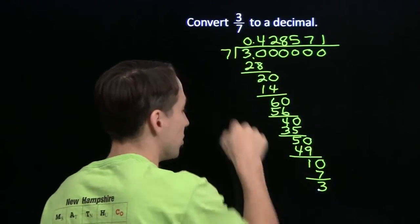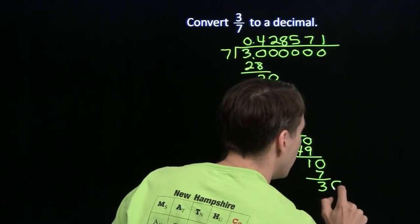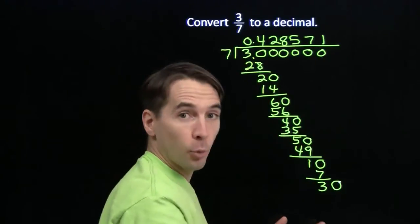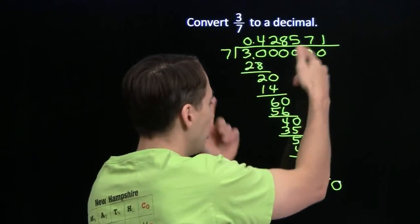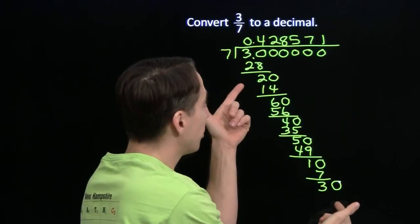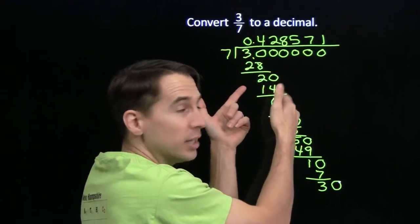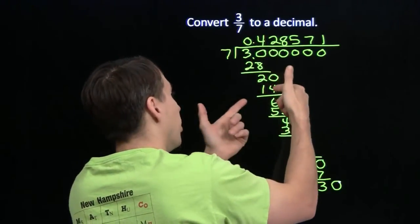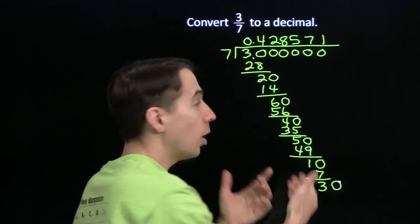7 into 3, we'll bring down a 0. 7 goes into 30, 4 times. But now we're repeating. That would be 4 times. We'll have 2 left over when we subtract 28 from 30. 7 will go into 20 then twice, and then we'll have 6 left over and on and on. We're repeating.